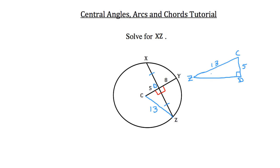Now if you remember your Pythagorean triples, this is a 5, 12, 13. So this side must be 12, which means that the length from D to Z must be 12 units long. And since D to Z is congruent to D to X, the total distance from X to Z must have a length of 24 units.